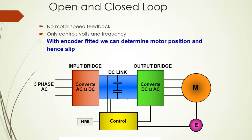There are two sections: open loop and closed loop. Open loop means no feedback — just start the motor according to the inverter. Closed loop means there is feedback. With closed loop there is motor speed feedback, controlling both voltage and frequency with encoders. Using encoders, we can determine motor position and hence enable slave control.